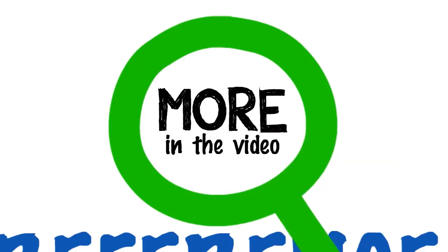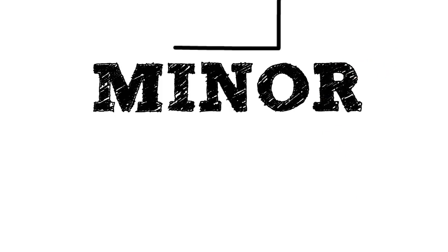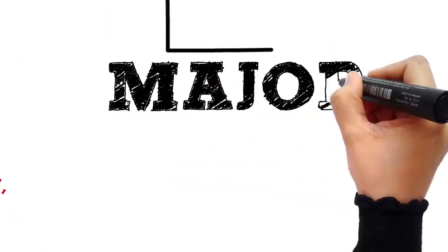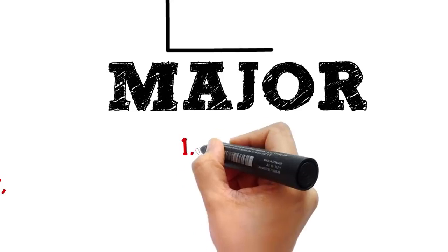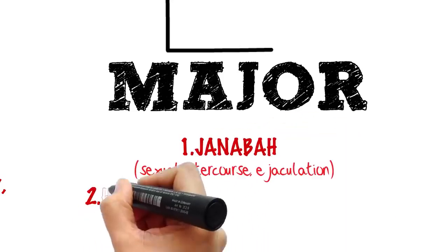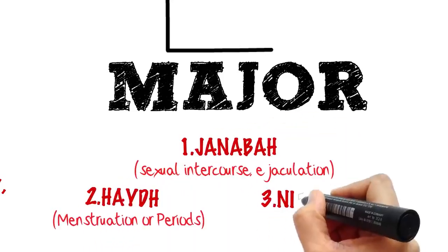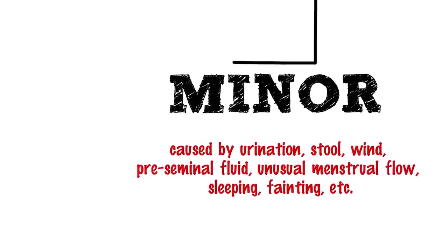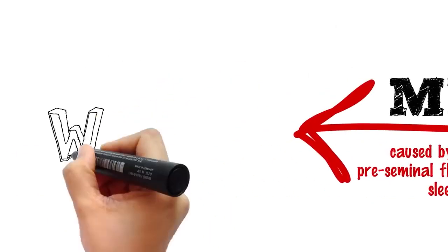So let's begin. There are two kinds of ritual impurities: the minor impurity and the major impurity, which occurs as a result of janabah, haid, or nifas. To achieve the tahara from the minor impurity, you only need to renew your wudu, or ablution.